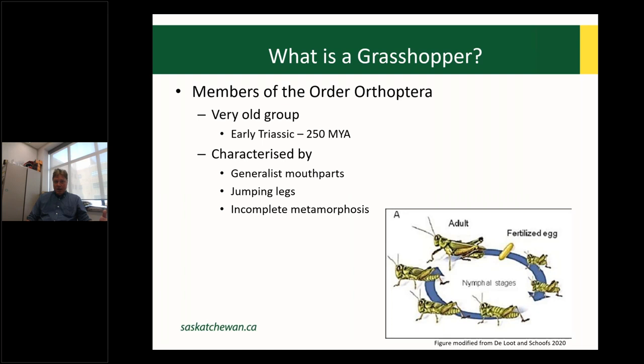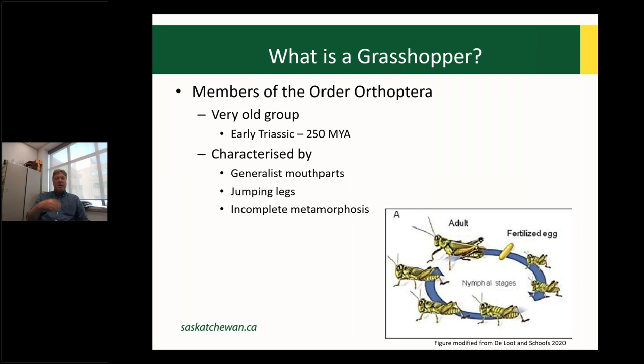From a fertilized egg, you get a neonate or first instar nymph. The period between the egg and the first molt is the first instar, and between subsequent molts are the second instar and so on. With our pest species, we have five nymphal instars. The last molt produces an adult — typically winged, and with our pest species, fully winged and excellent fliers in many cases.